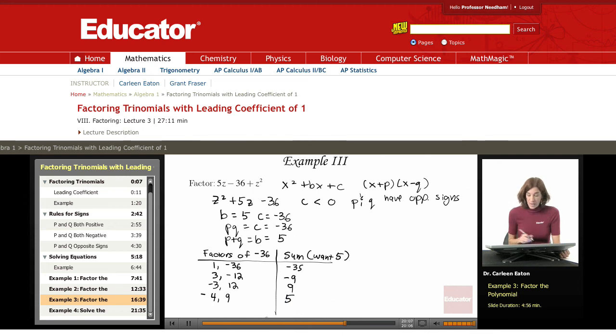So I found my solution for p and q, the correct numbers. And I did that by saying they're going to have a sum of 5 and a product of negative 36. That means they're going to have opposite signs.